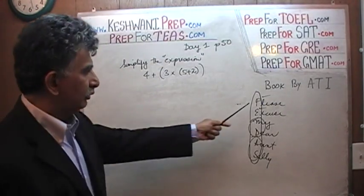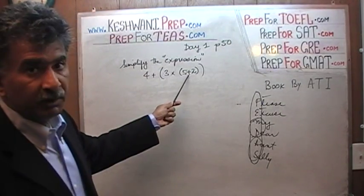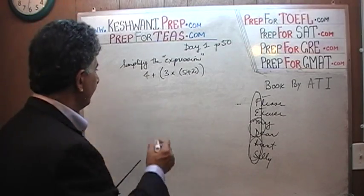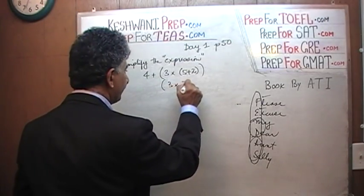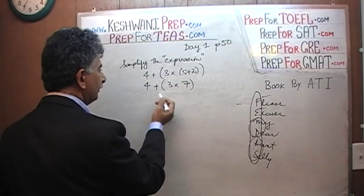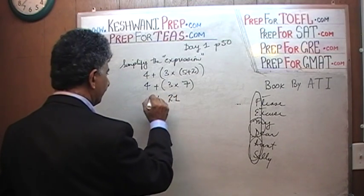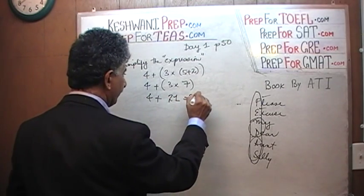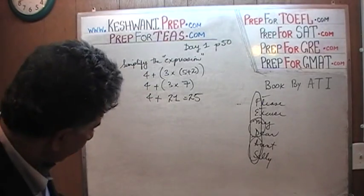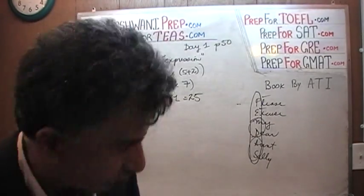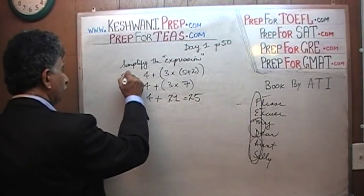So as we already know, we have to do the parenthesis first and we do the innermost parenthesis first. 5 plus 2 is 7. So here what we get is 3 times 7 plus 4. 3 times 7 is 21 plus 4 is going to give us 25. That was number 1.